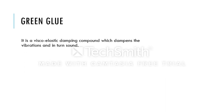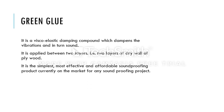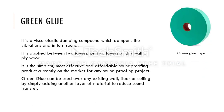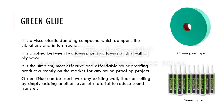Green glue is a viscoelastic damping compound which dampens vibrations and in turn reduces sound. It is applied between two layers of drywall or plywood. It is the simplest, most effective, and affordable soundproofing product currently on the market for any soundproofing project. Green glue can be used over any existing wall, floor, or ceiling by simply adding another layer of material to reduce sound transfer. As its name suggests, it is a glue which pastes different materials together while providing sound insulation through sound damping. It is available in two forms: as green glue tape, and in tubes.